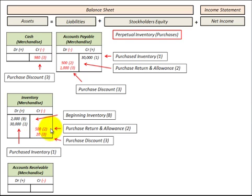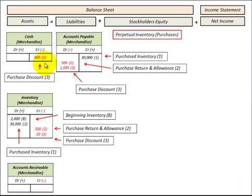Inventory is reduced by $500 for the purchase return and allowance. Now if we take a purchase discount — say we're going to pay $1,000 on our accounts payable — we reduce accounts payable by $1,000 and take our purchase discount. With a 2% discount, we decrease our inventory account by $20, and the balancing entry is to cash, where we paid $980. So we owed $1,000, ended up paying $980, which is $20 less because we received the purchase discount.